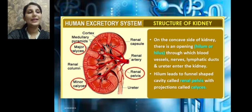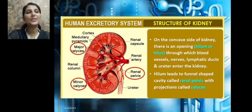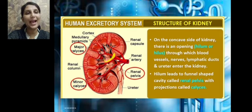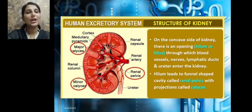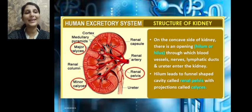The hilum leads to a funnel-shaped cavity called the renal pelvis. The renal pelvis has certain projections called calyces — we can see the major calyces and the minor calyces. So the hilum leads into the funnel-shaped renal pelvis, which is provided with projections called calyces.